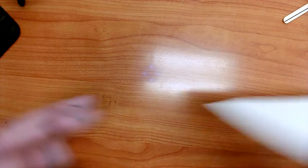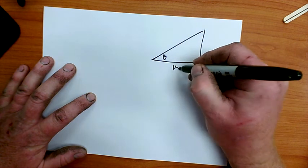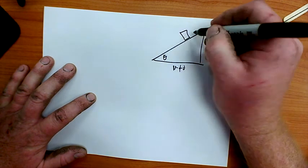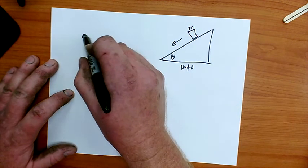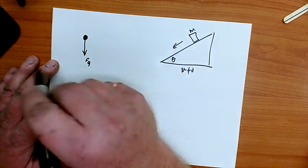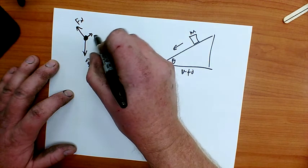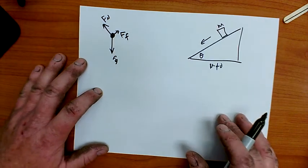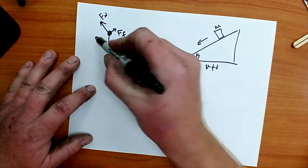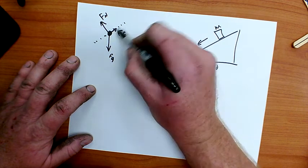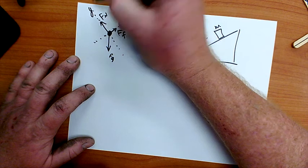Now let's look at what happens when there is friction — mu not equal to zero — and the block accelerates down the ramp again. I start with my force diagram: gravity straight down, normal force perpendicular to the surface, and friction parallel to the surface. Then I rotate my axes to make the x-axis the surface of the ramp, so friction is entirely in the x direction and the normal force is completely in the y direction.